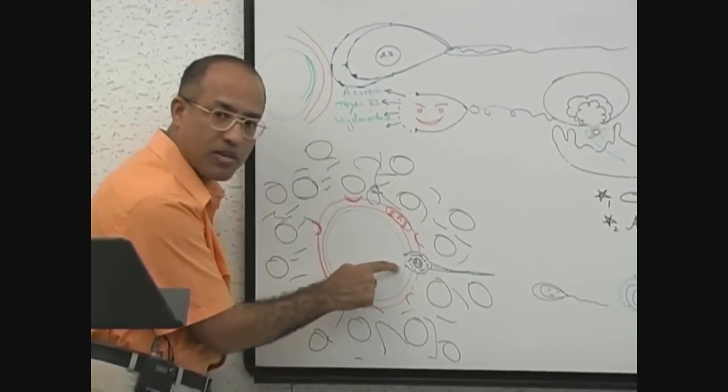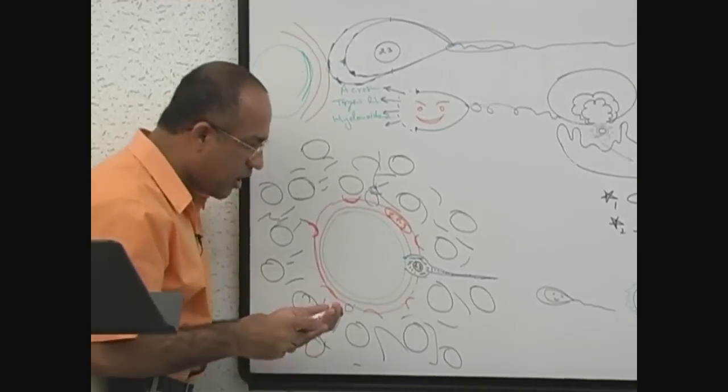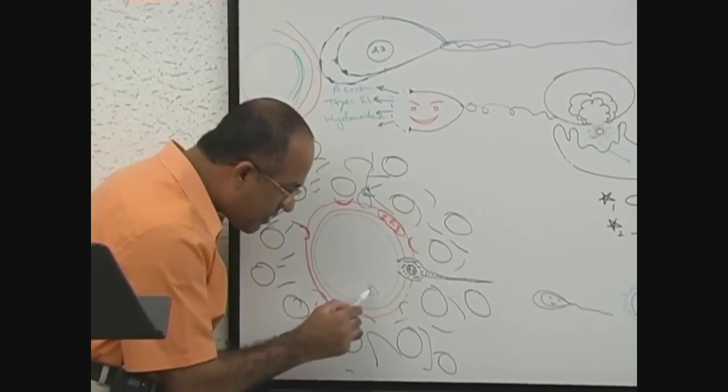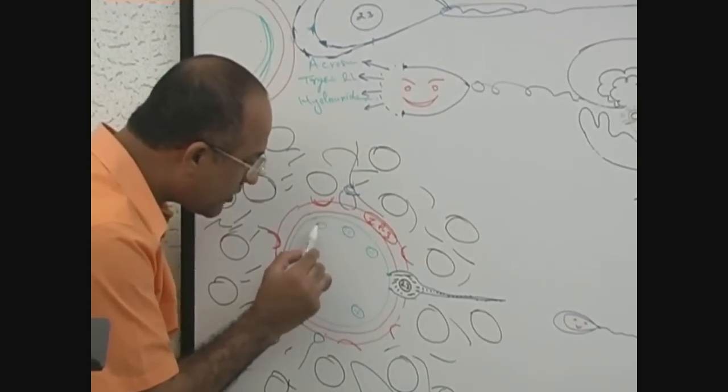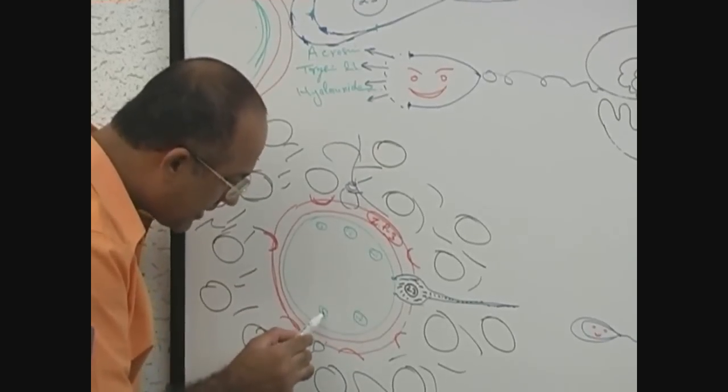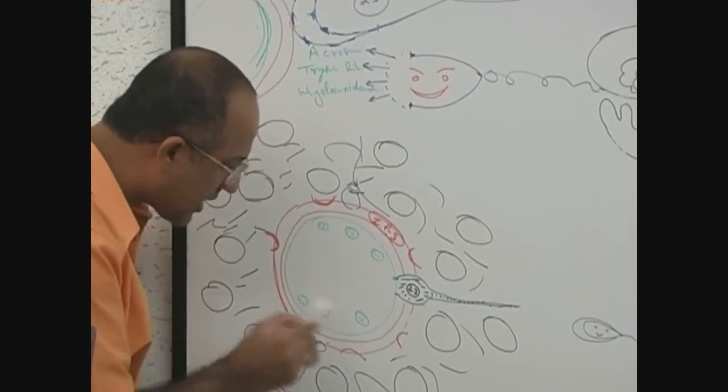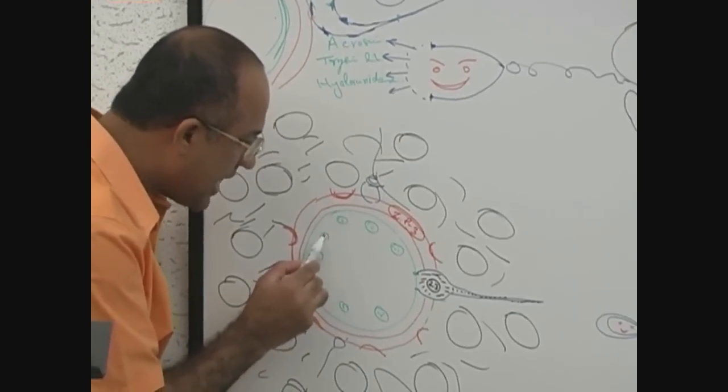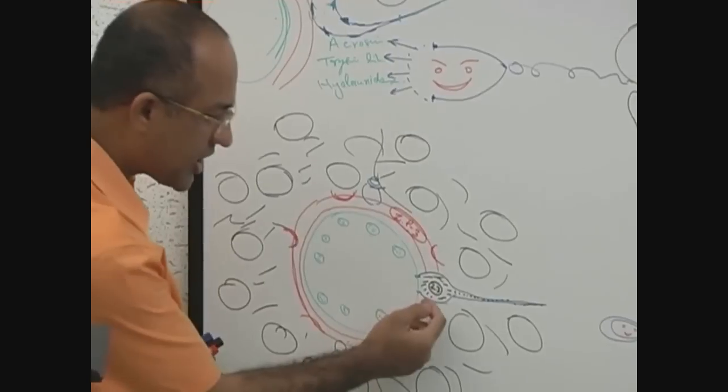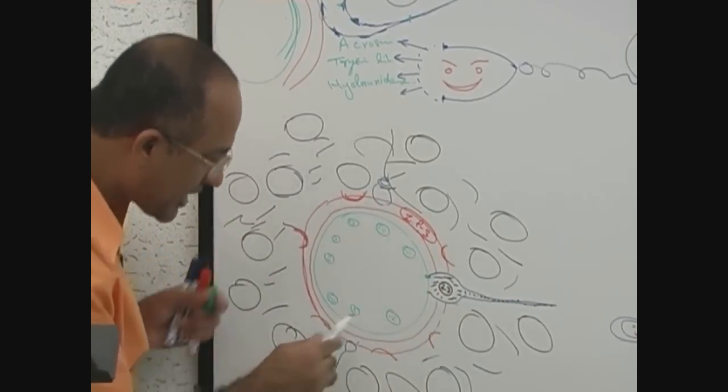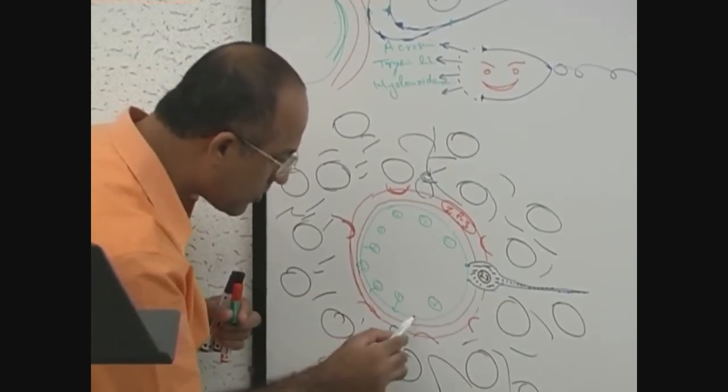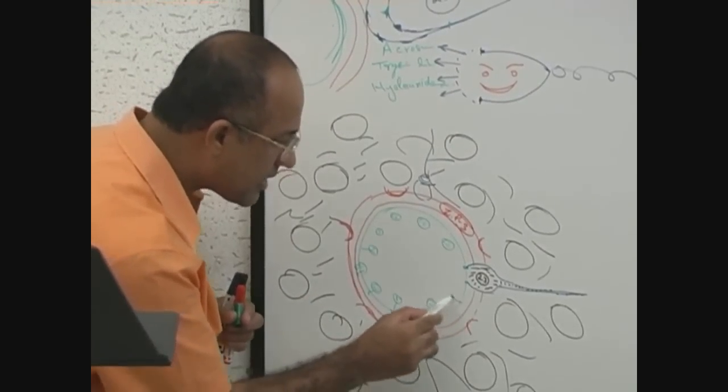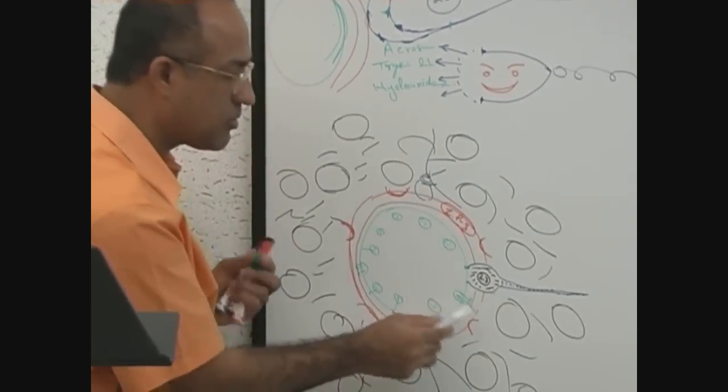The ovum, again a very feminine behavior, is having a lot of lysosomal enzymes in cortical granules. As soon as there's a magic touch of the sperm, these cortical granules will move to the surface of ovum and ovum will release lysosomal enzymes.